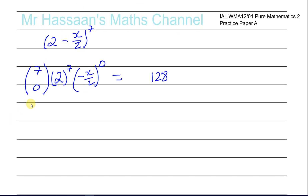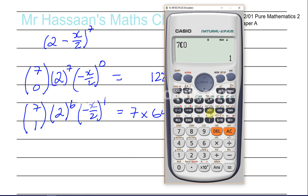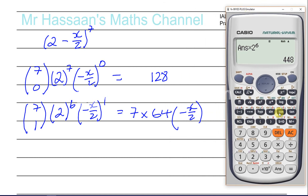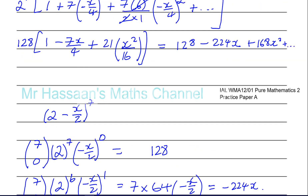For the second term, you use 7C1. This power goes down by 1 to give 2 to the power of 6, and the second term's power goes up by 1 to give minus x over 2 to the power of 1. 7C1 is 7, and 2 to the power of 6 is 64. So you have 7 times 64 times minus x over 2. That gives negative 224x. So the second term is minus 224x.